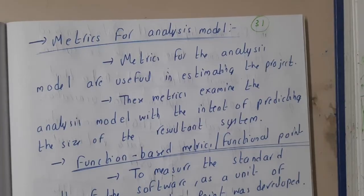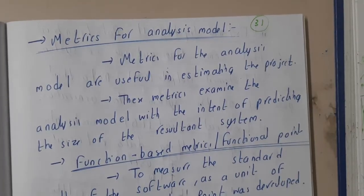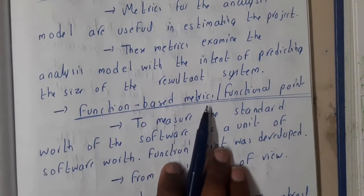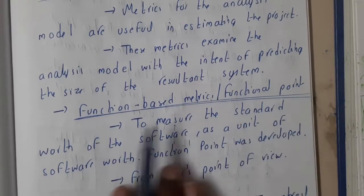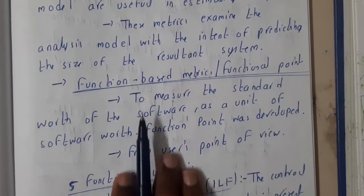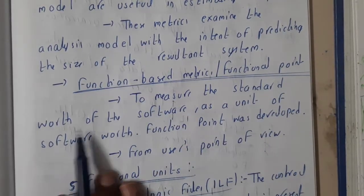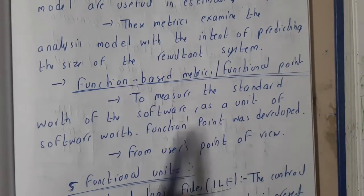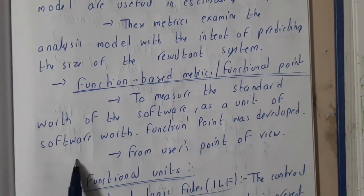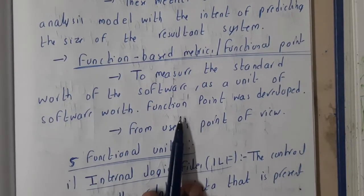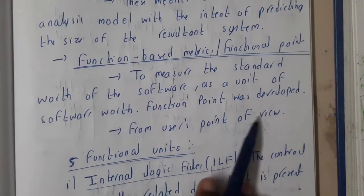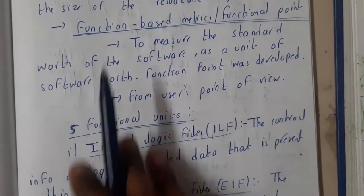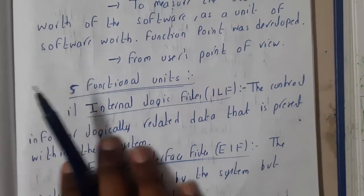Based on the requirements you will be analyzing things in the analysis model. The functional-based metrics, that is nothing but function points, are used to measure the standard worth of the software — the current worth of the software as a unit of software worth. Function points were developed for these kinds of things, and basically there are five different functional units.